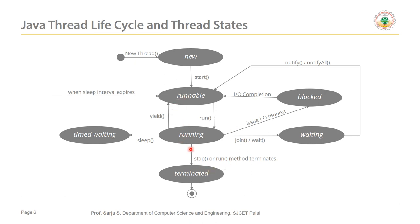A thread can be put in the waiting state for various reasons, for example by calling a wait() or join() method. Usually a program puts a thread in the waiting state because something else needs to be done prior to what the current thread is doing. Once the required process completes, the thread is notified using notify() or notifyAll() methods, then it changes from the waiting state back to the runnable state.